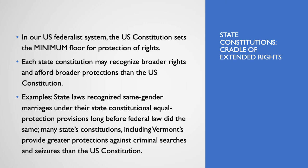In our U.S. federalist system, the U.S. Constitution sets the minimum floor for protection of rights. Each state constitution may recognize and protect broader rights and afford broader procedural protections to its citizens than the U.S. Constitution. For example, a number of states had said that same-gender marriages are lawful or required under their state constitutional equal protection provisions long before federal law did the same. And many state constitutions, like Vermont's, provide far greater protections against criminal searches and seizures than the U.S. Constitution does under federal law.